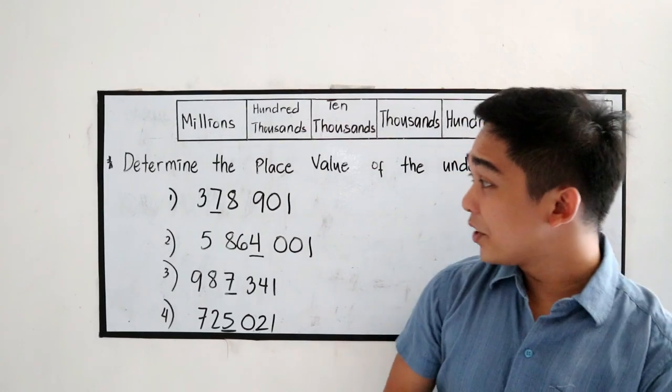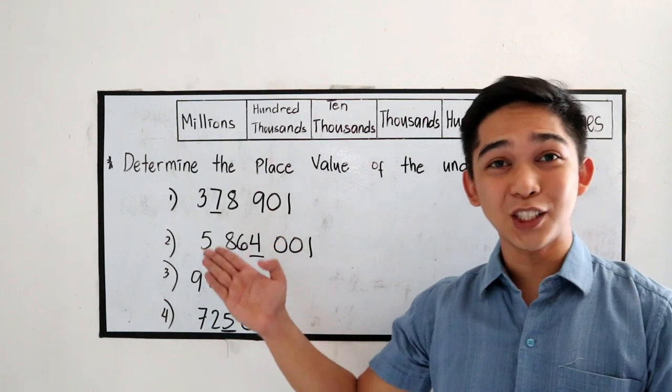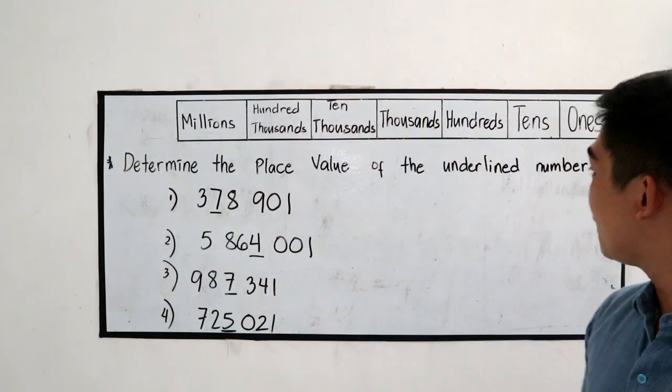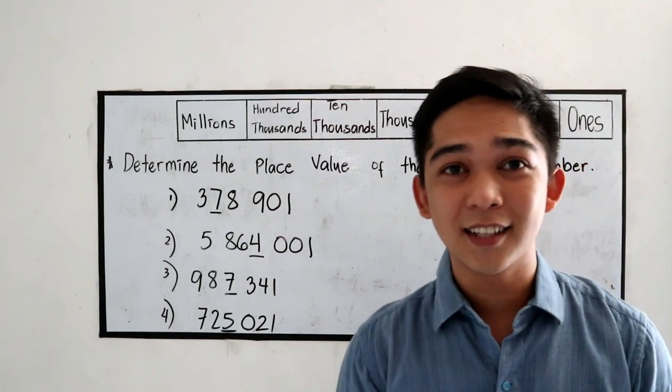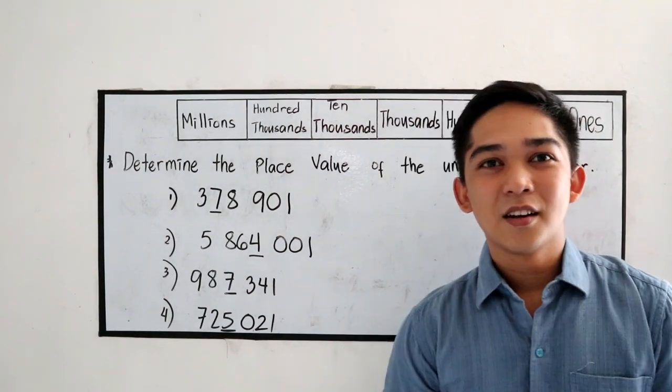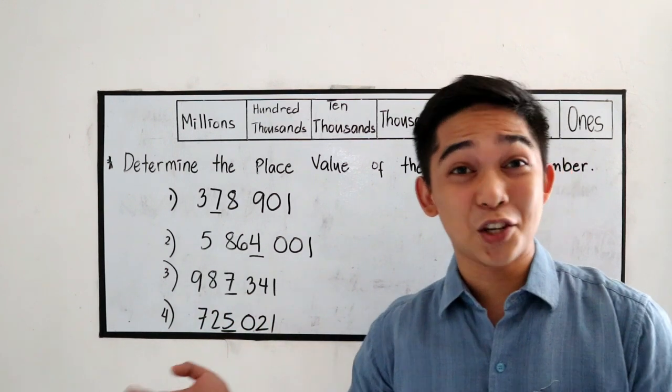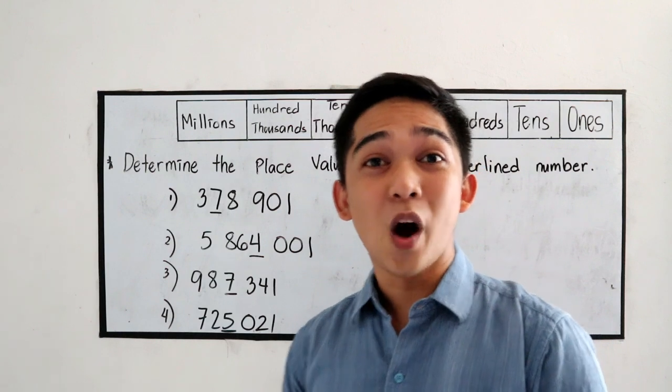Now, I have here exercises number 1, 2, 3, and 4. Determine the place value of the underlined number. After you are done answering, ask your mom and dad to check your work.